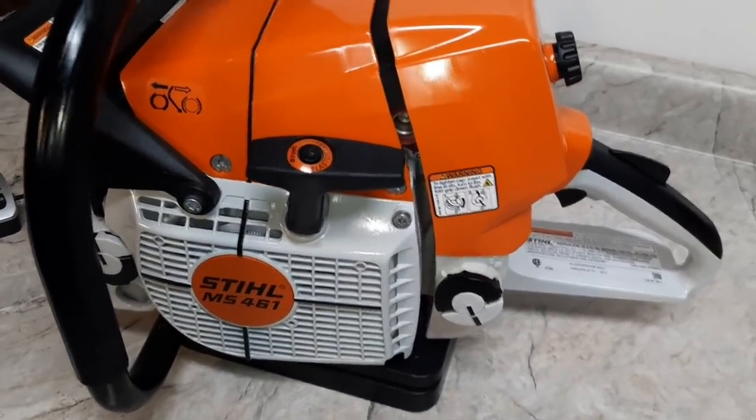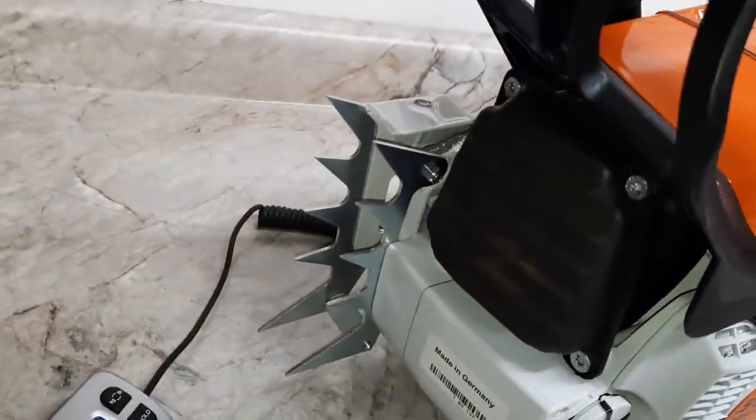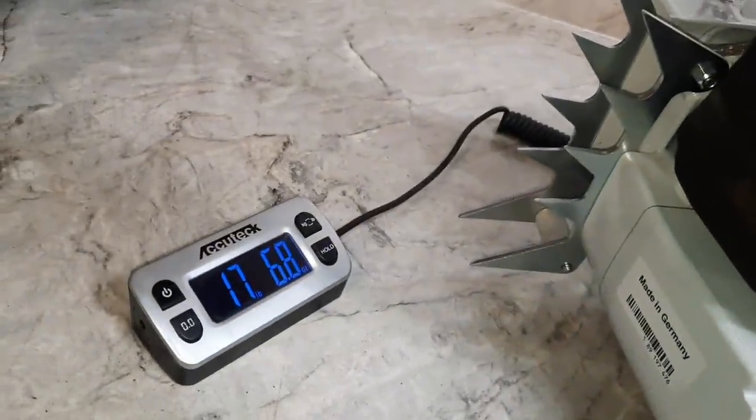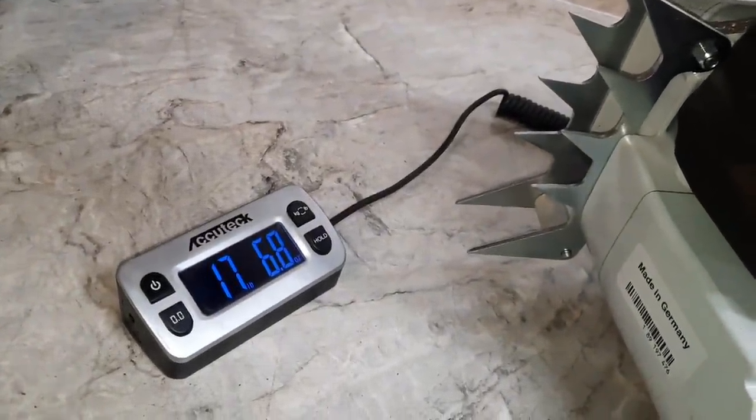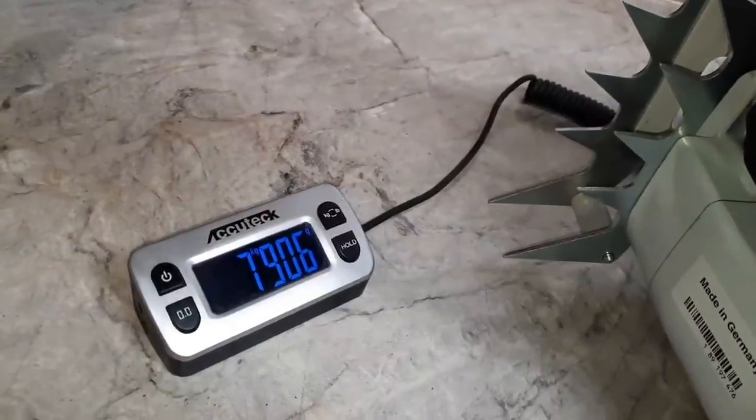Stihl 461. This has got the wider cover and the larger spikes. I believe it's the R cover. 17 pounds, 6.8 ounces. There's the metric version.